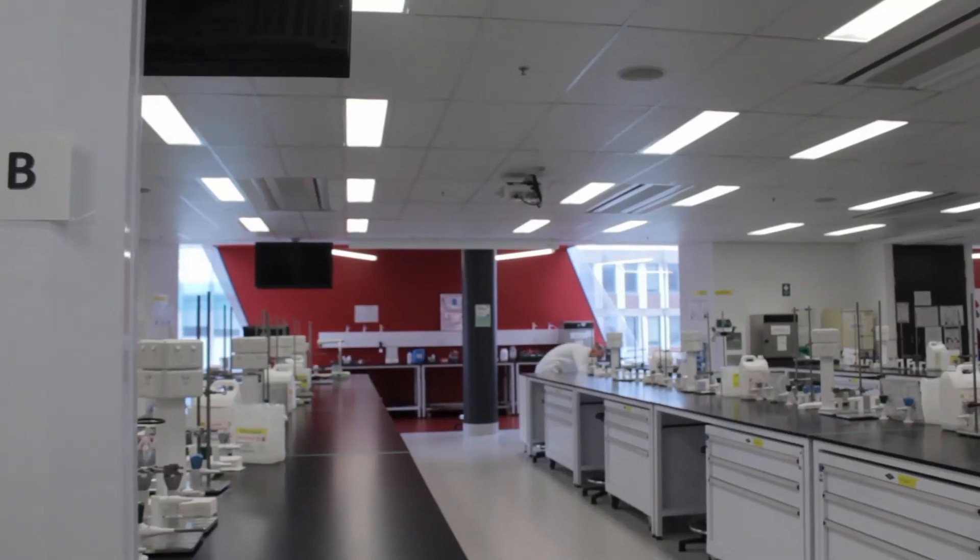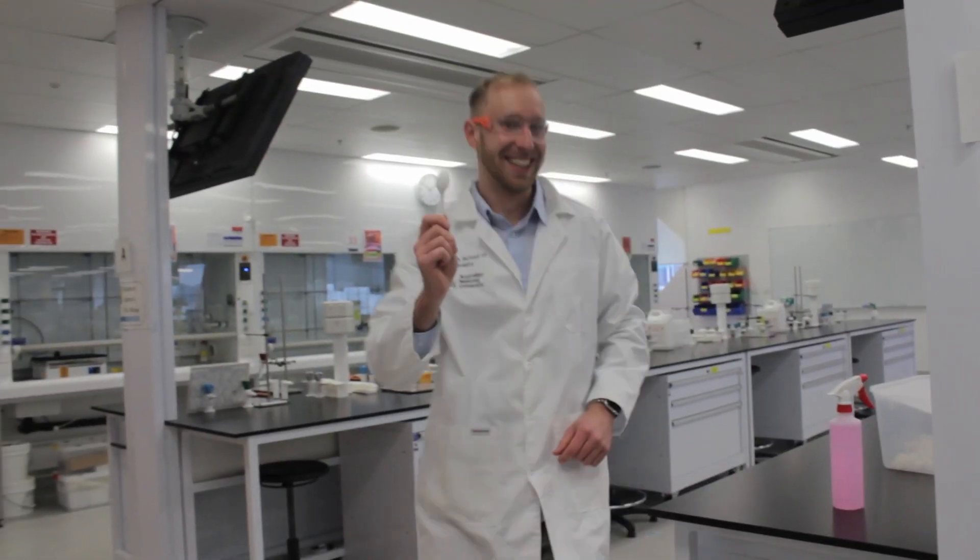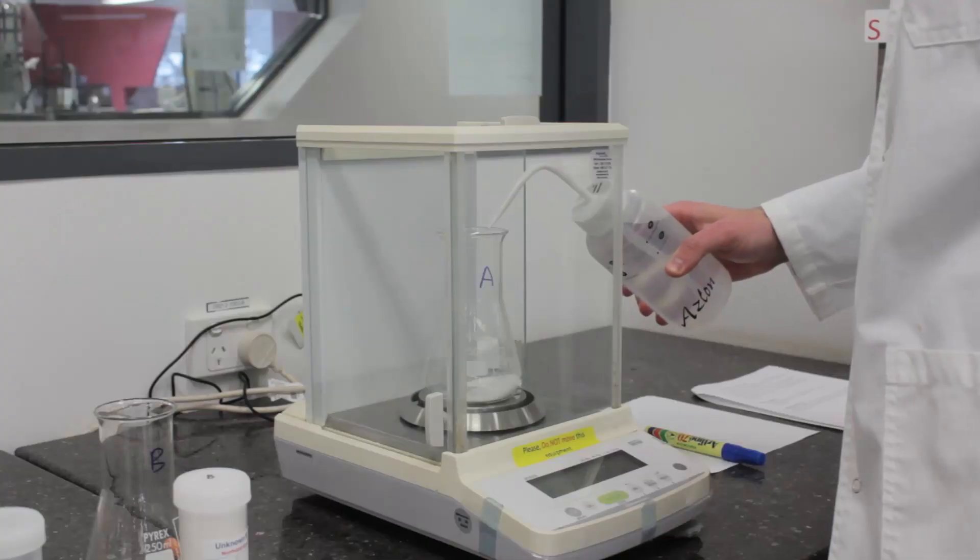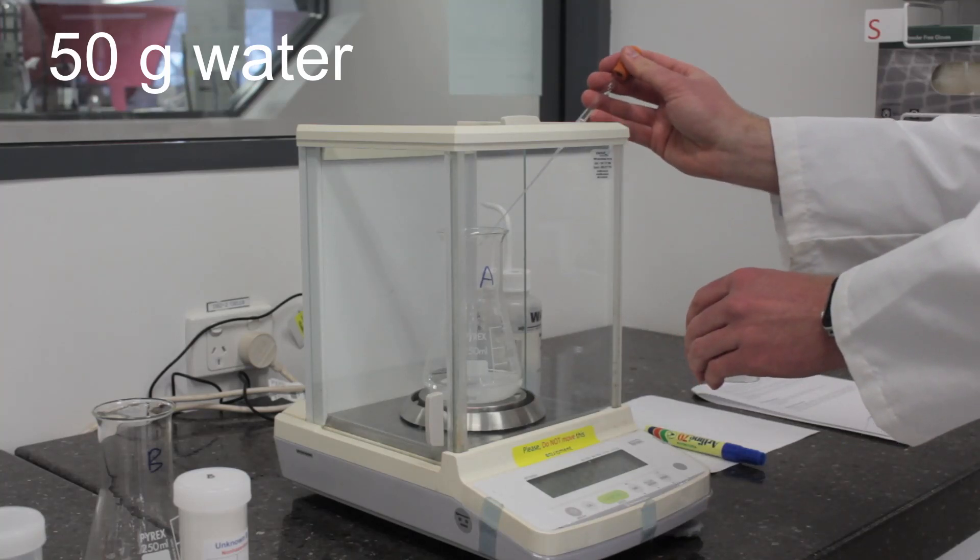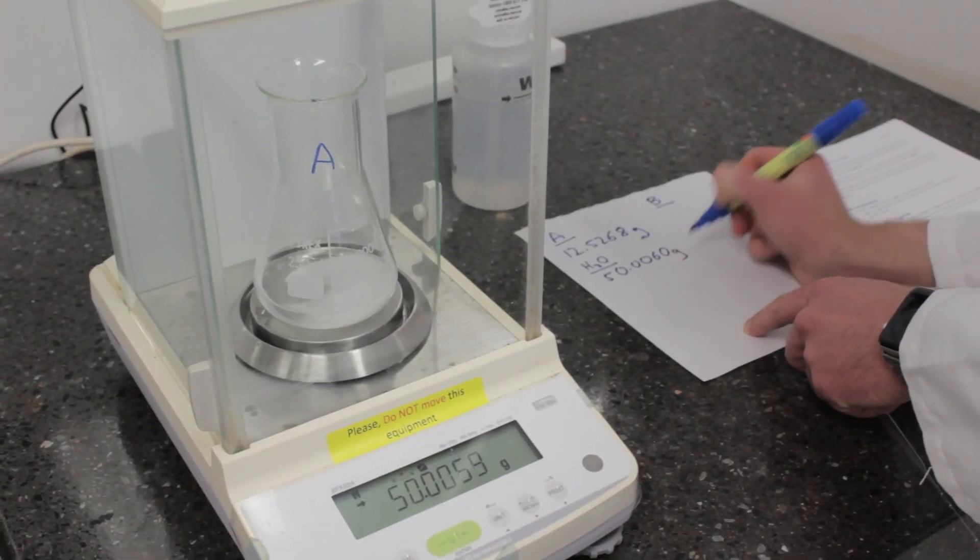Realize halfway through that your spatula is tiny and go get a plastic spoon instead. Tare the scale again and add 50 ml of distilled water, finishing it off with a pasteur pipette. Record both masses for your molality calculations.